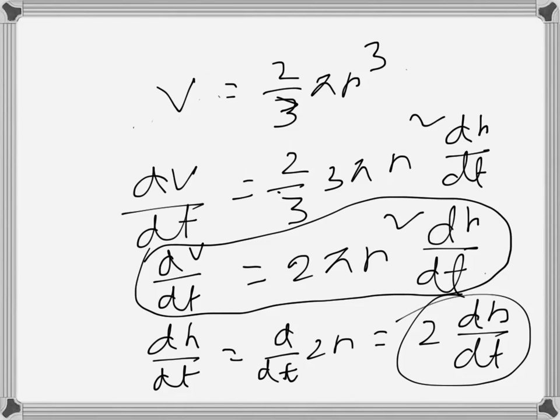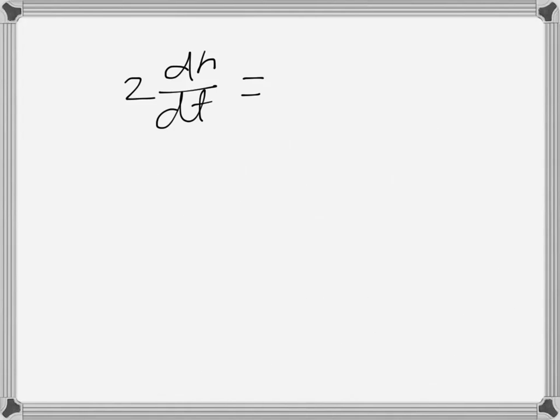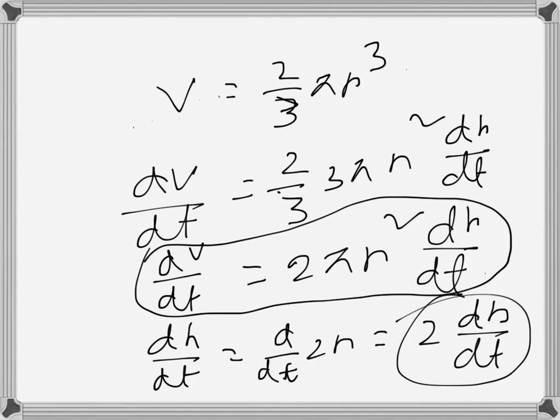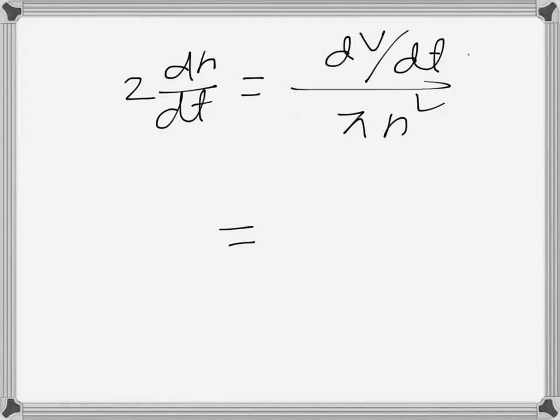We need to find 2 dr/dt from the right-hand side. We have dV/dt = 2πr² dr/dt. Since we need 2 dr/dt, dividing both sides: 2 dr/dt = dV/dt / (πr²).